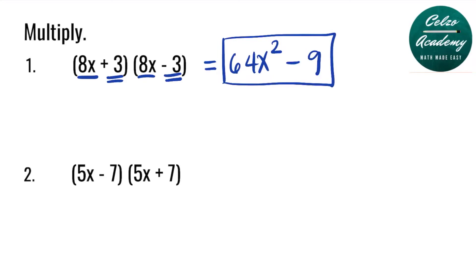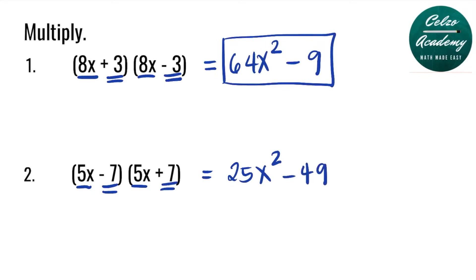Question number 2 is also a product of sum and difference because they're the same and one is plus and the other is minus. Step 1 is to multiply the first terms 5x and 5x, that's 25x squared. Step 2, multiply the second terms negative 7 and positive 7, and that is negative 49. So the answer is 25x squared minus 49.